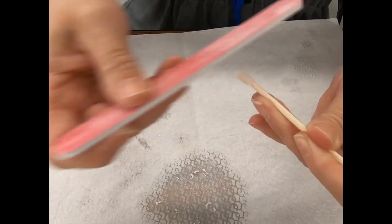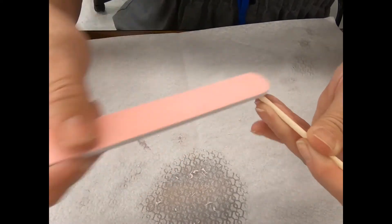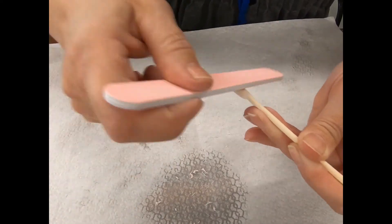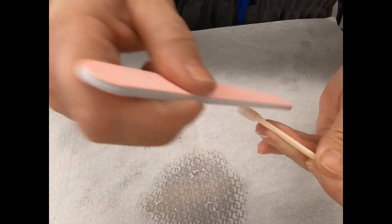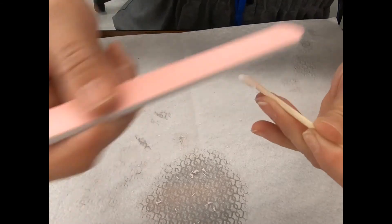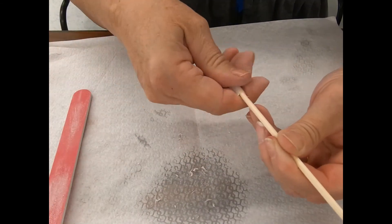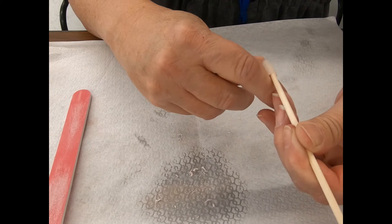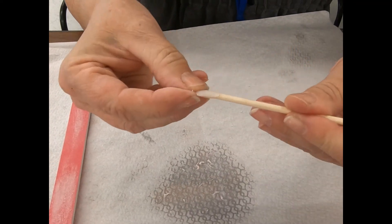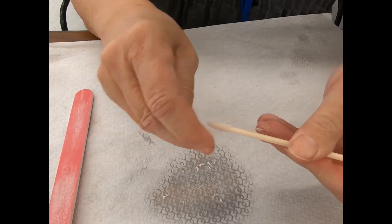So after I do the light pink side, I'm going to finish with the dark pink. I always want to finish with the finer of the grit. It's nice and smooth. I want to make sure that nothing is stuck underneath.